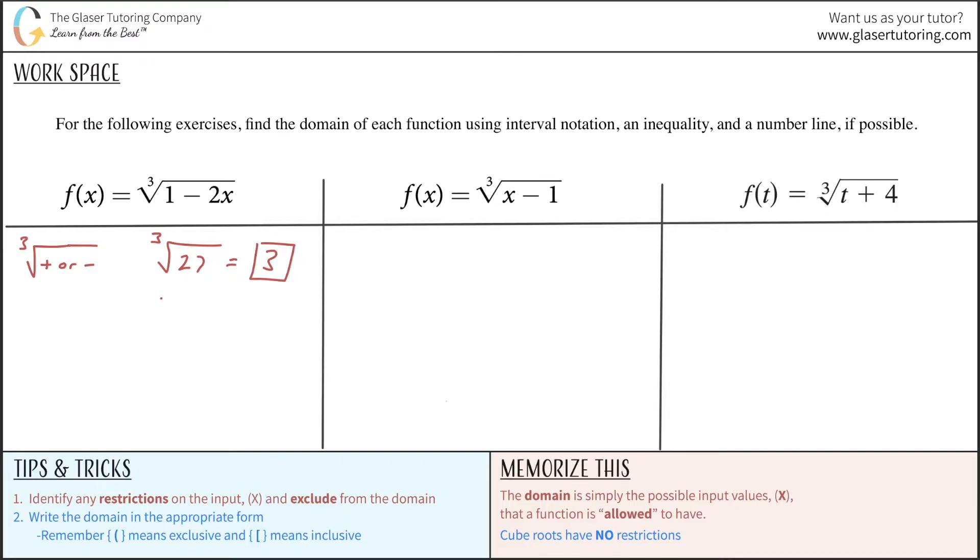Also though, I can take the cube root of negative 27. Because I'm asking myself, what number times itself three times would give me negative 27? And that answer is negative 3. So you can take the cube root of a negative number, unlike a square root. You cannot take the square root of -27. It's impossible. No number times itself will give you a negative number. So that being the case, we realize why cube roots have no restrictions.